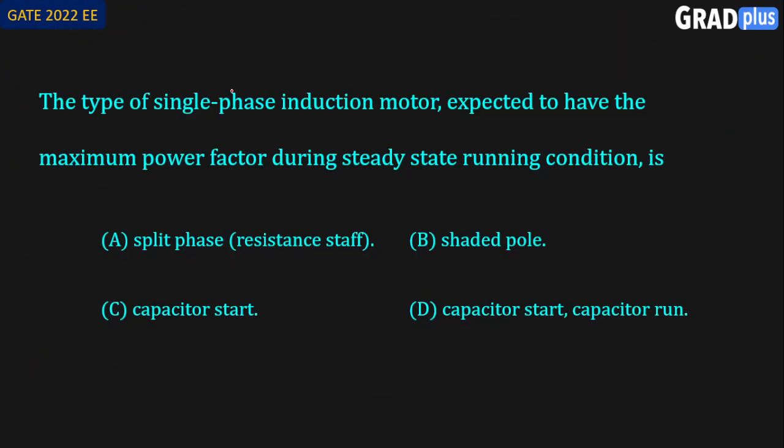This is a question from GATE 2022. The question is: the type of single-phase induction motor expected to have the maximum power factor during steady state running condition is — with options: split phase (also known as resistance start), shaded pole, capacitor start, and capacitor start capacitor run. From these four options, we have to find out which will have the maximum power factor.